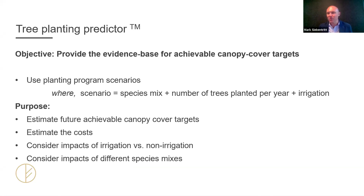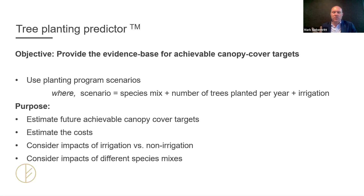One council put to us that they had concerns around whether they were actually including the right resources — as in dollars — in their long-term financial plans to back up their ambitious canopy cover targets. The tool explores planting program scenarios: a species mix combined with a number of trees planted per year, and whether irrigation is or isn't happening. The key outputs include what's a future achievable canopy cover target, what's the cost of getting there, the benefits of irrigation versus no irrigation, and the impact of different species mixes.